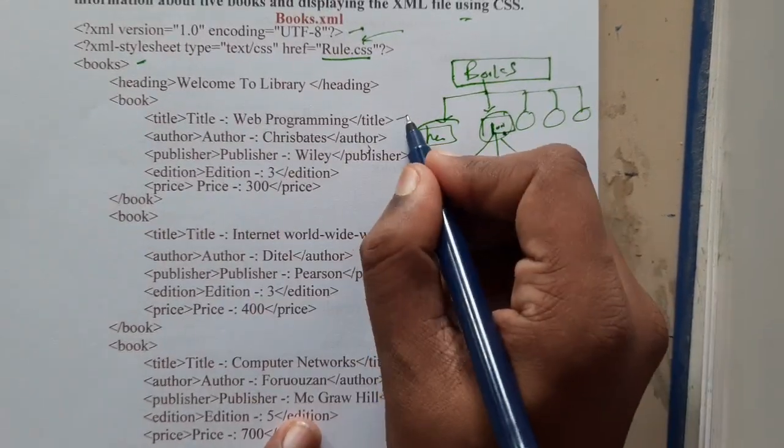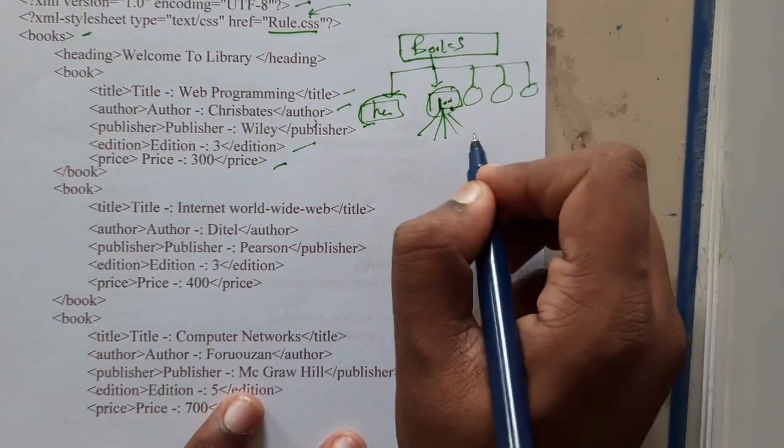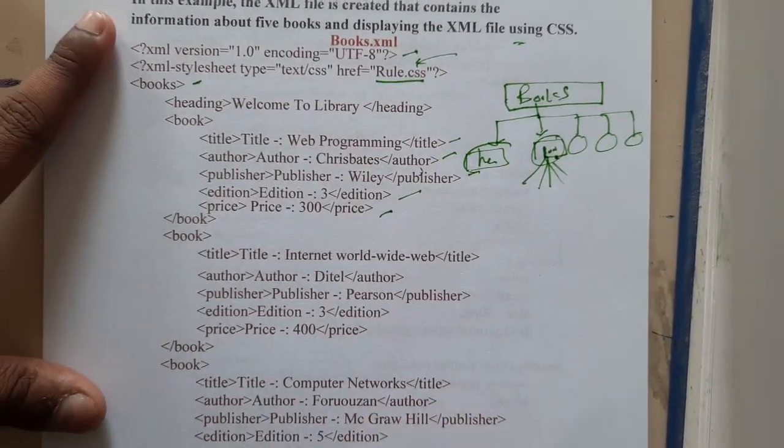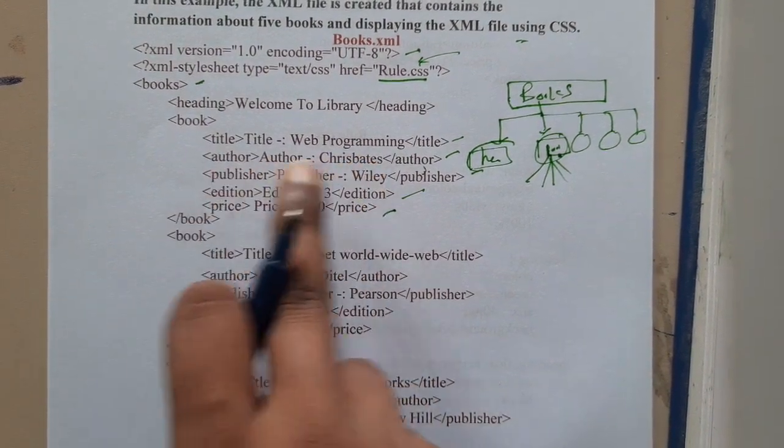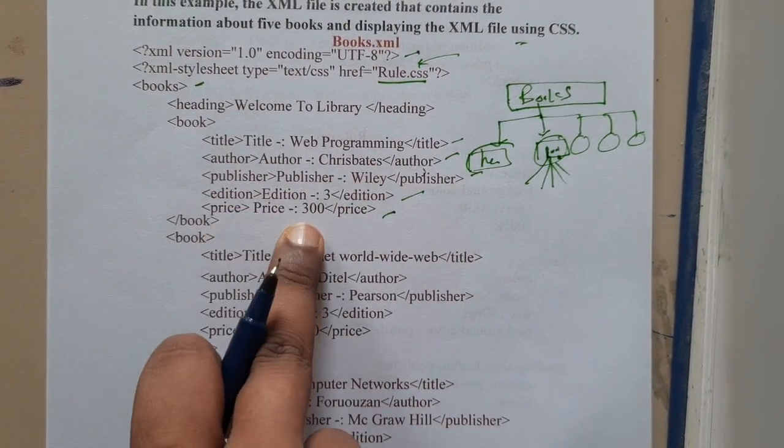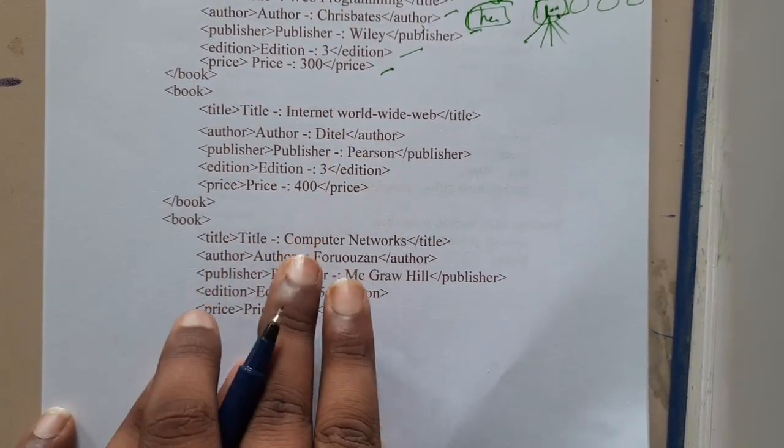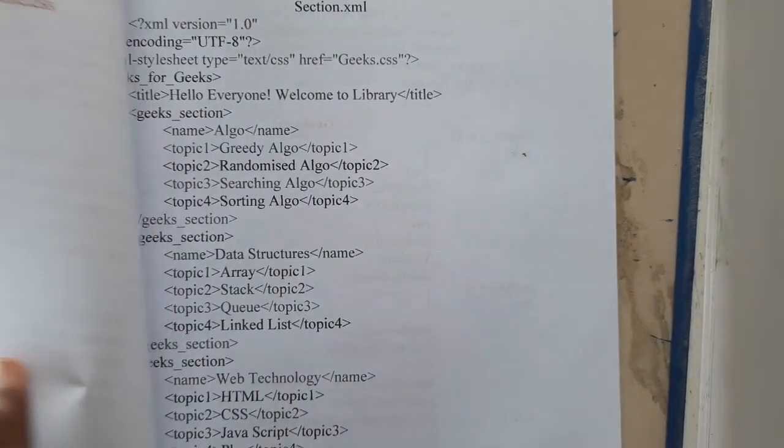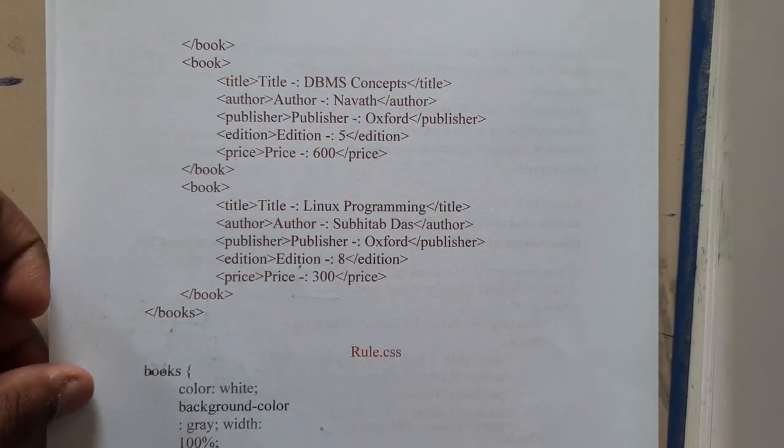Each book is having title, author name, publisher, editor, edition, and price. Those are all the attributes. You have defined them in terms of English: title, web programming, author the name, publisher the name, editor the name, price the price. You have written everything in this way.